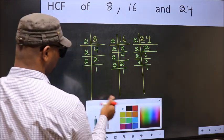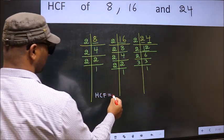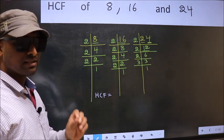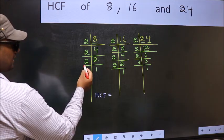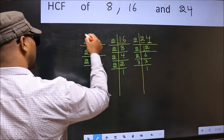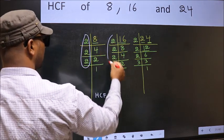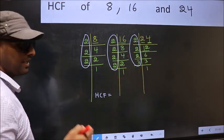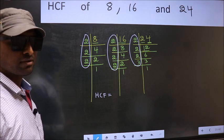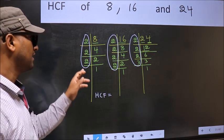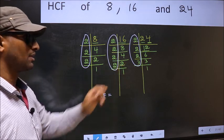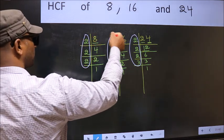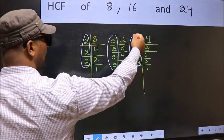Therefore our HCF is the product of numbers which should be present in these 3 places. That is here and here and also here. So now let us find the numbers which are present here and here and also here.